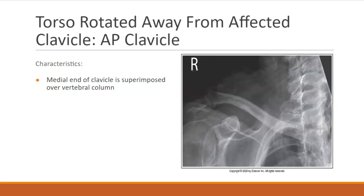Let's review some common positioning errors. Just like in the shoulder, a lot of the rotation rules and tilting rules apply to the clavicle. If the torso is rotated away from the affected clavicle, the AP projection will show the medial clavicular end superimposing the vertebral column rather than being just lateral to it. In order to correct this, you'll have to move the patient towards the affected clavicle to get that mid-coronal plane parallel with the IR.